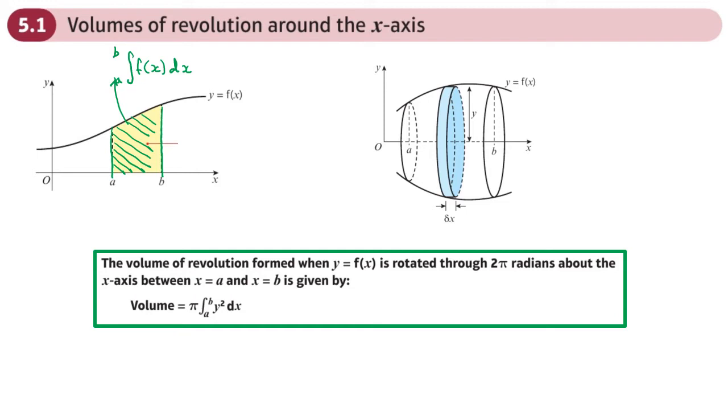If we get these really thin strips and we rotate them 360 degrees around the x-axis, so imagine that this strip here got rotated around the x-axis 360 degrees like that, it would create a volume. That's what we call a volume of revolution, taking the particular area and rotating it 360 degrees around the x-axis. You can do volume of revolution around the y-axis as well, which is the next section.